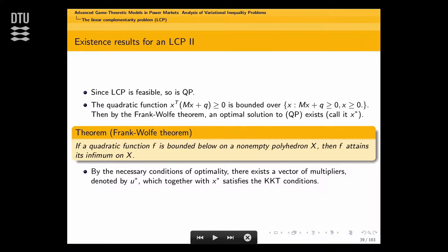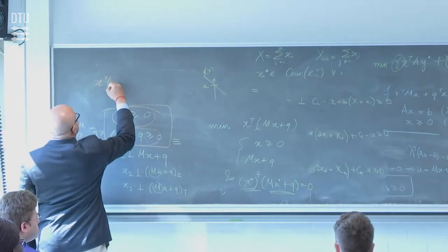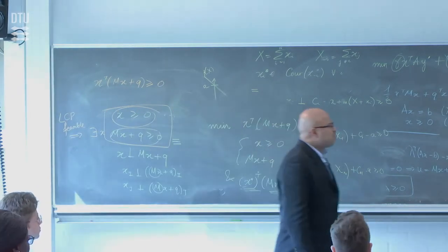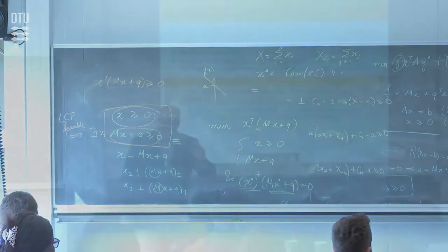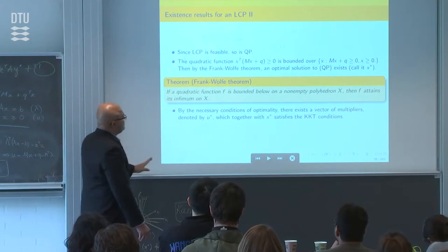Why is it bounded? When I say bounded, it means it can't go to negative infinity. One of the big challenges in optimization is when the function goes down to negative infinity and the problem isn't well posed. It doesn't happen here because the objective is X-transpose times MX plus Q. Since X is non-negative and MX plus Q is non-negative, we know X-transpose times MX plus Q also has to be non-negative — it's bounded below by 0. I have not said anything about positive semi-definiteness; all I've used is the feasibility of the LCP.